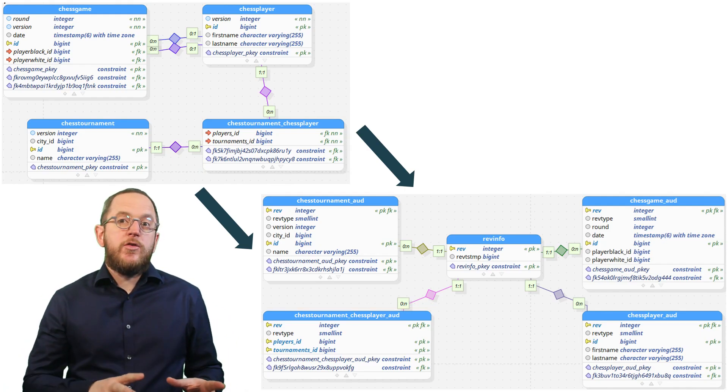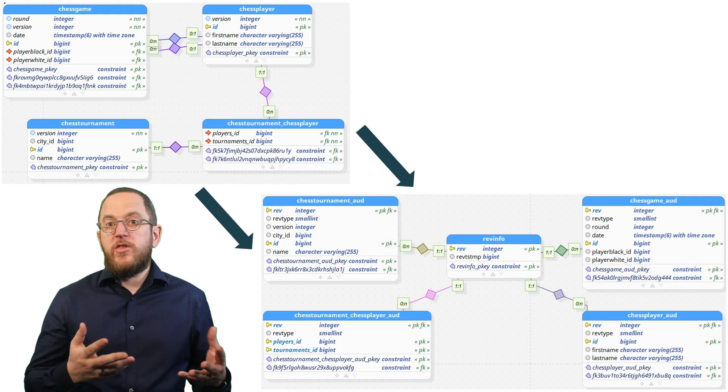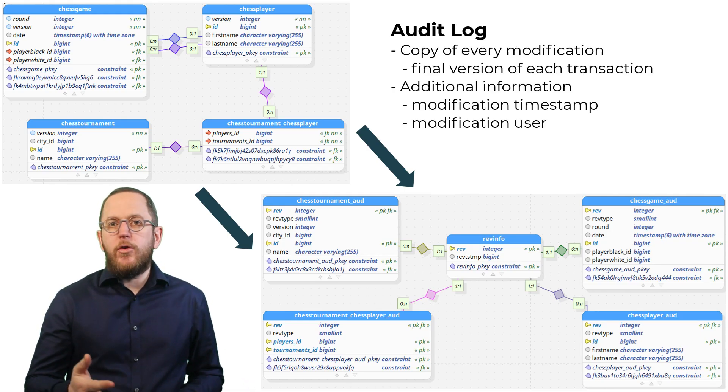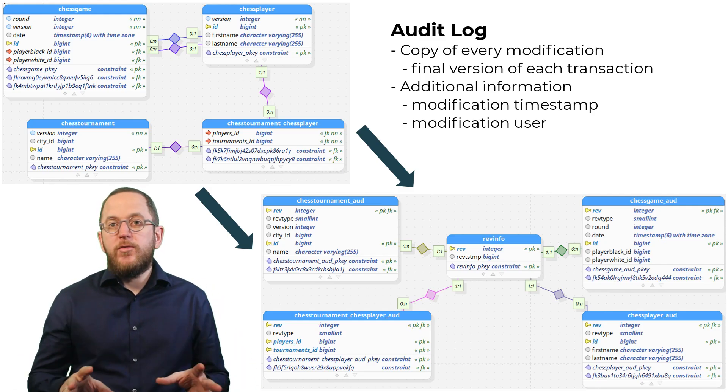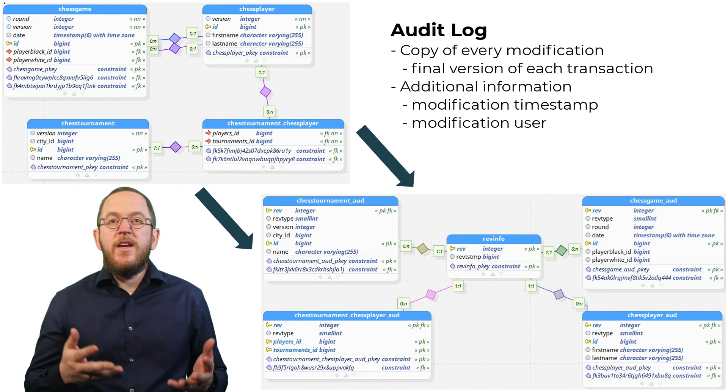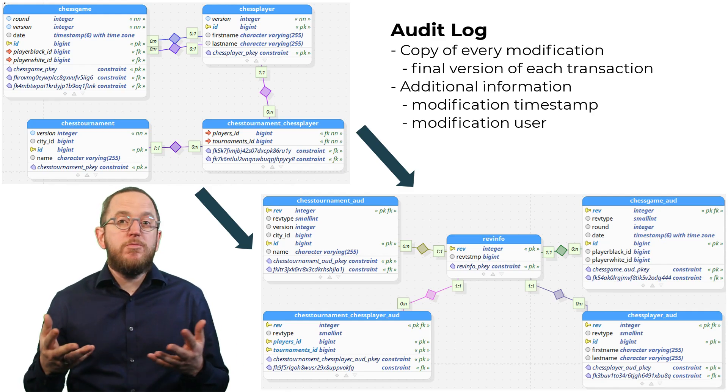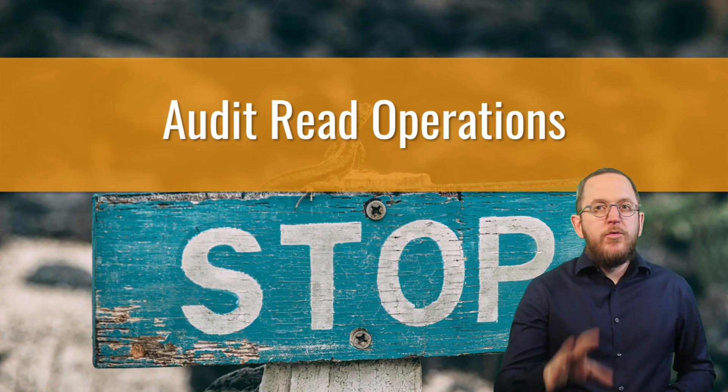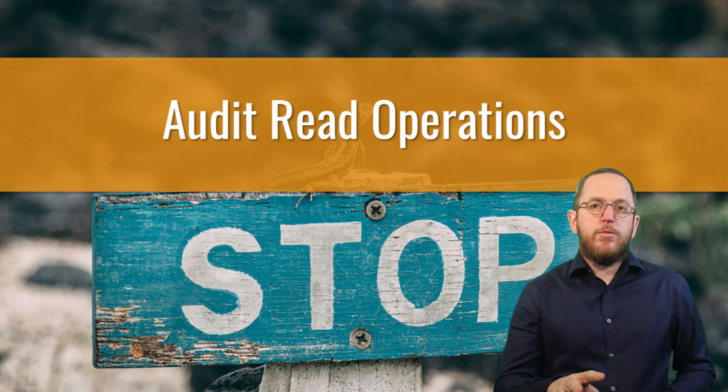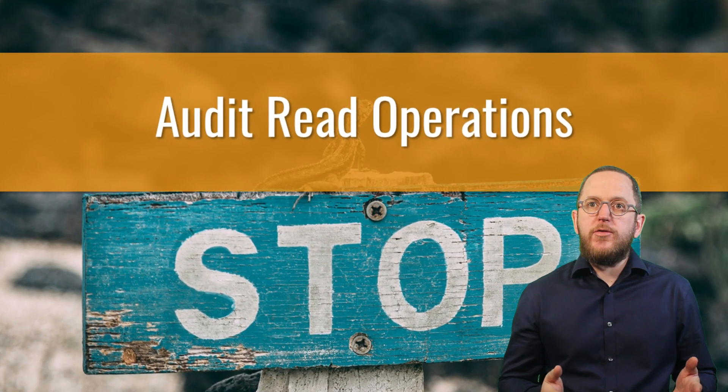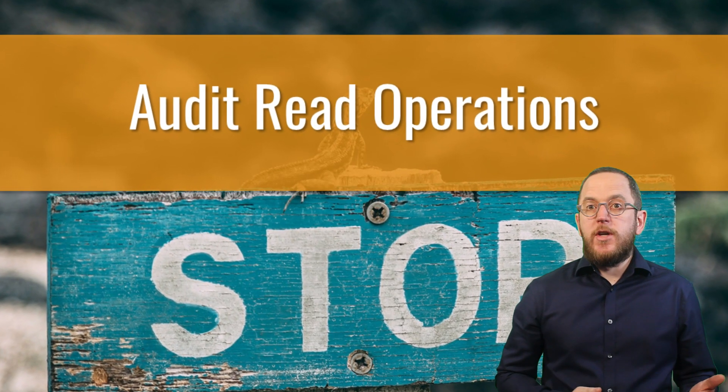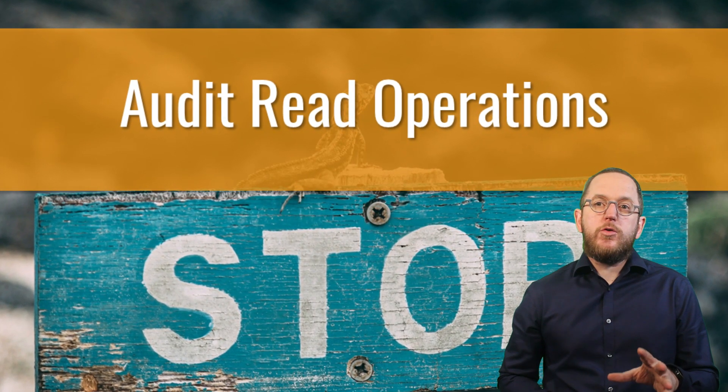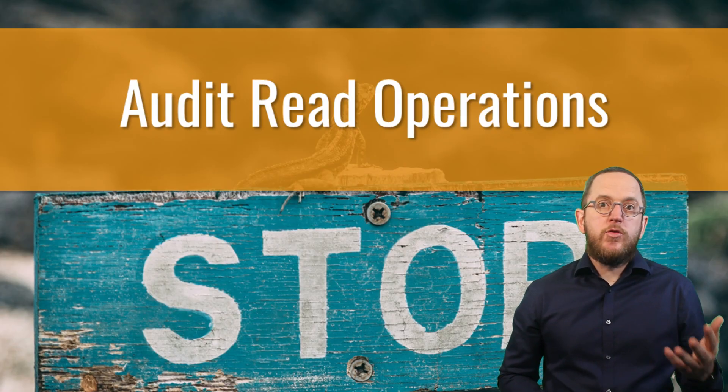Changes to the relationship between audited records should also be audited. If you want, you can also include more information than just the changes in your audit log. Audit logs often also include timestamps and users who performed the change. This information is often required and makes your audit log much more useful in general. And before you ask, you can also include read operations, but I strongly suggest not doing so unless you really have to. Auditing read operations can drastically slow down your application. So if you don't have to include read operations, only audit write operations.